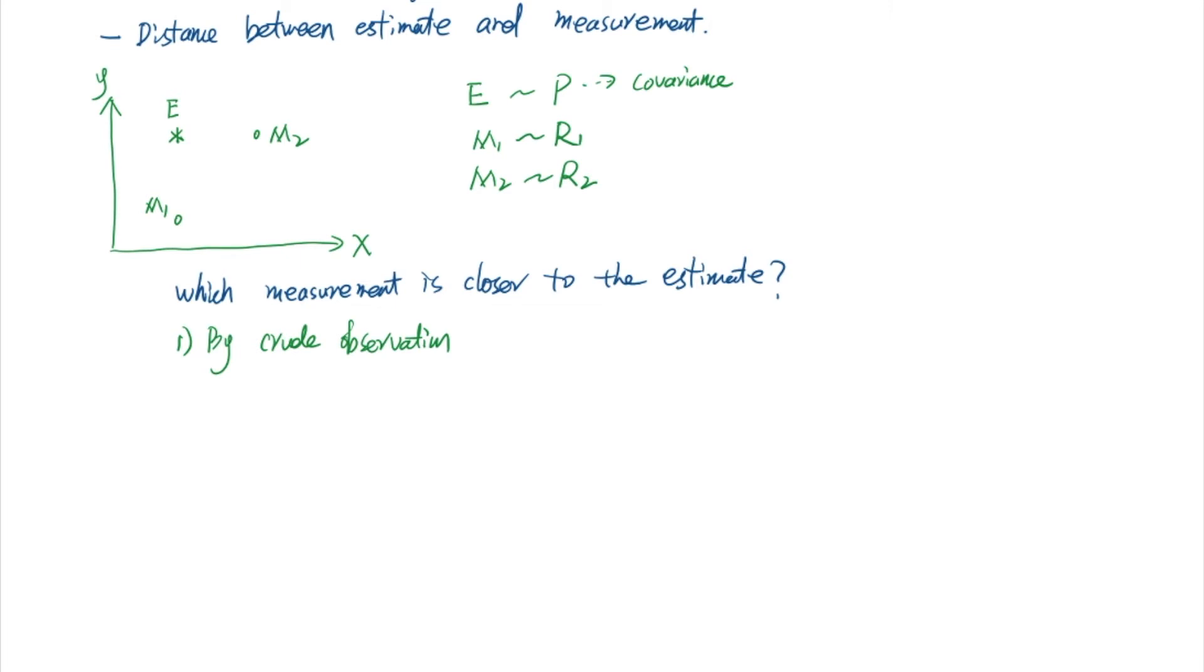The first way is by crude observation. Let's take a look at the distance between E and M2 and E and M1. We found that the distance between E and M2 is smaller by crude observation. So in this case, we said M2 is closer.